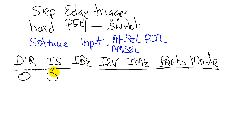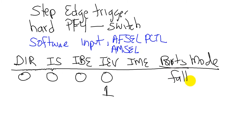Next, we're going to clear the IBE bit because we don't want both edges, but we do want either the rising edge or the falling edge. The IEV bit equal to zero means it's a falling edge, edge-triggered. The IEV bit equal to one would be a rising edge.